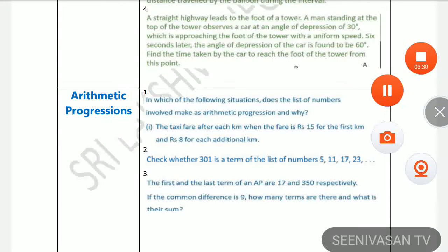The first and the last term of an AP are 17 and 350 respectively. If the common difference is 9, how many terms are there and what is their sum?